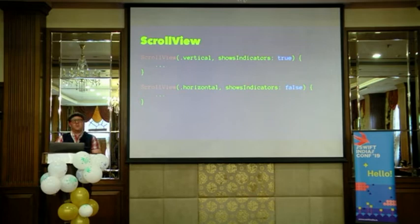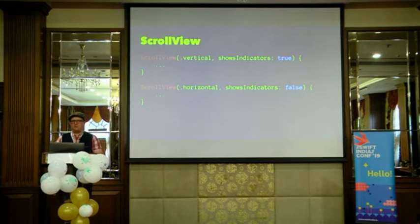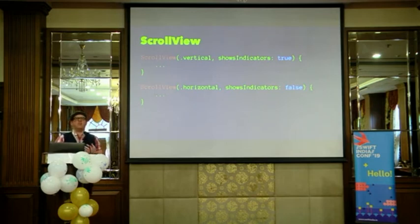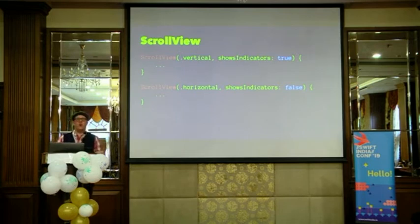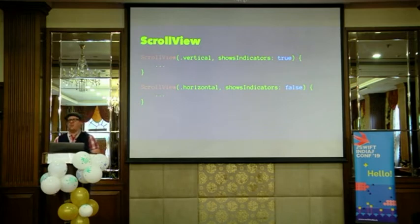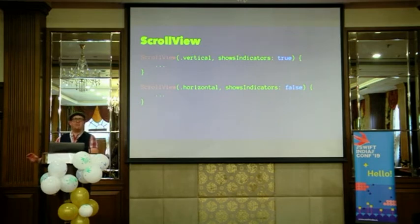Our next friend is ScrollView, and this is one that we all know and love since the days of iOS 2. ScrollView in SwiftUI is a lot more declarative than its imperative cousin in AppKit and UIKit. Here we are saying just lay out all of these things within a ScrollView. We are saying which axis it should work on — either vertical or horizontal — and whether it should show indicators or not. We're doing away with all of the headache from UIKit and AppKit, like worrying about content size.